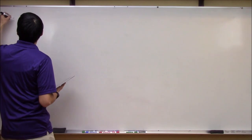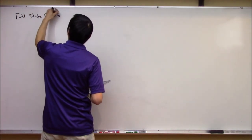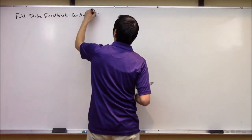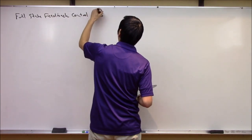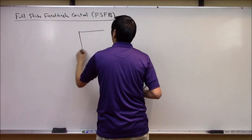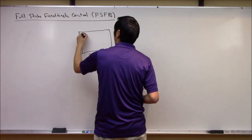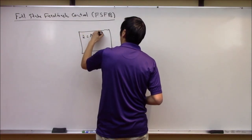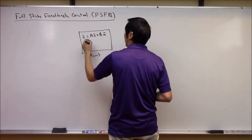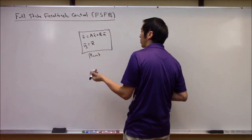To refresh your memory, the idea with full-state feedback control — let's just abbreviate this FSFB — was that you had some plant model, typically modeled as a linear state space model: X-dot equals AX plus BU, and Y in this case is equal to the entire state vector. So the C matrix was an identity and the D matrix was zero.